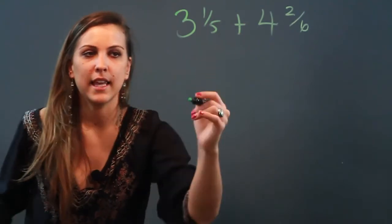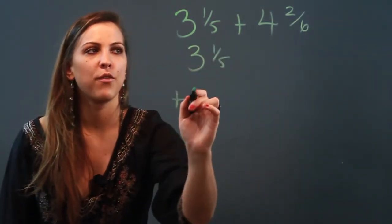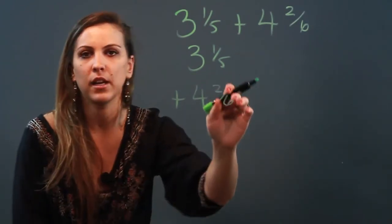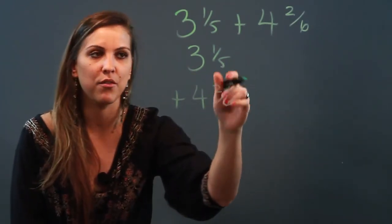Set it up vertically first, so you have 3 and 1/5 plus 4 and 2/6. I need to make sure that the denominators in my fractions are the same, and right now they're not.